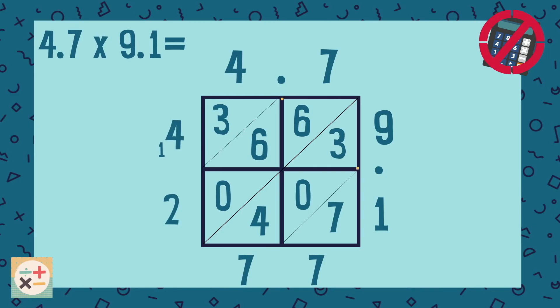Next, draw a vertical or horizontal line from each decimal until both lines meet. Then follow this point diagonally. This is where the decimal in your answer should be.